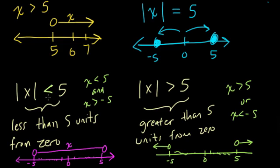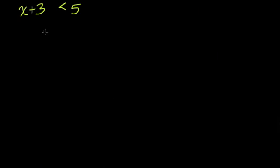If you happen to see less than or equal to, or greater than or equal to, that just changes our endpoints slightly — we fill them in as solid circles. This leads us into some other examples. What if we said we want to graph the absolute value of x plus 3, where it's less than 5?